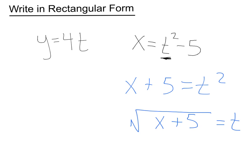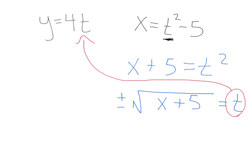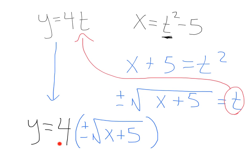And whenever you take the square root of both sides, you have to do your plus or minus. Now that we have our t value written in terms of x, we can just take this t and we can substitute it in to our first equation, replacing t with plus or minus square root of x plus 5. Doing that, we're going to get y equals 4 times plus or minus square root of x plus 5.